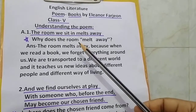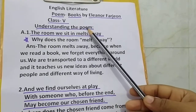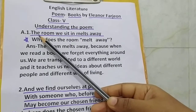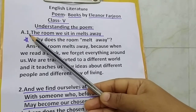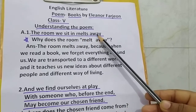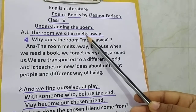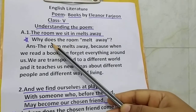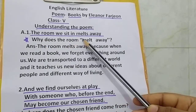First of all we will do 'Understanding the Poem'. The line taken from the poem is: 'The room we sit in melts away.' Based on this line, the question is: why does the room melt away?